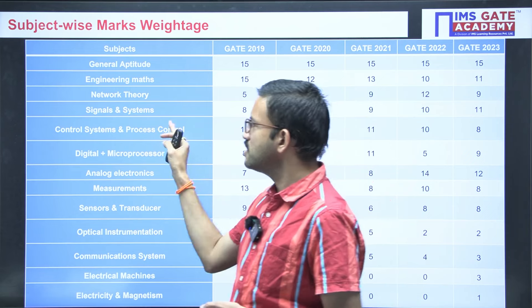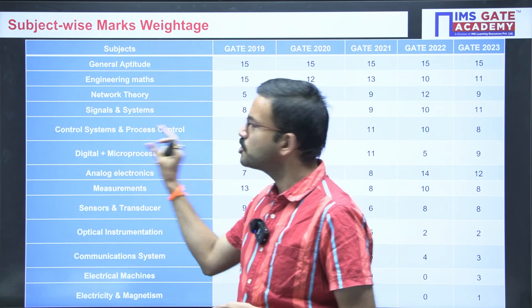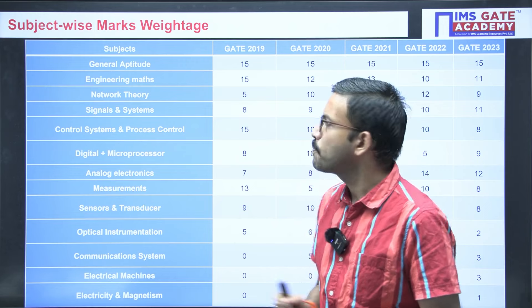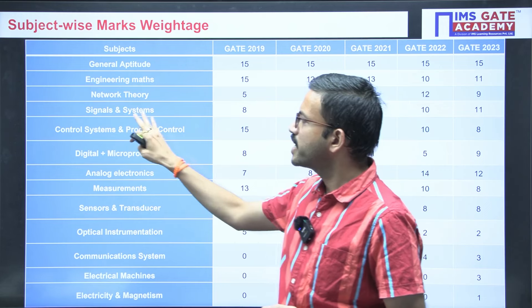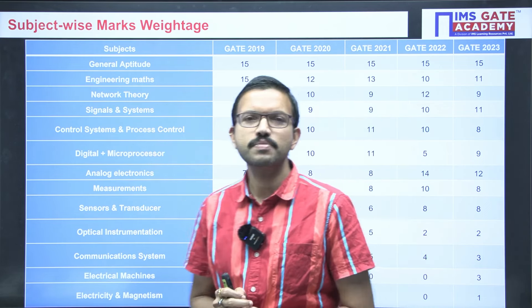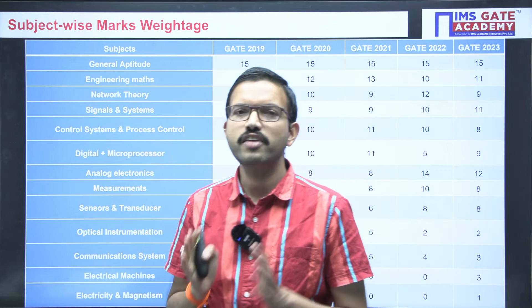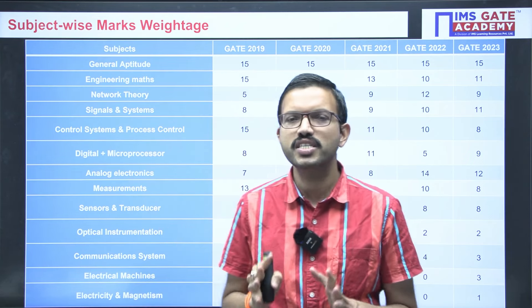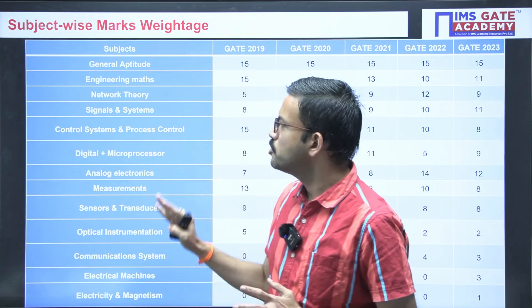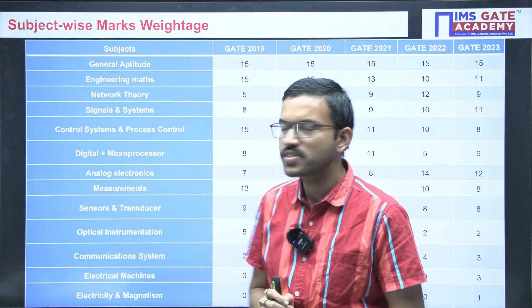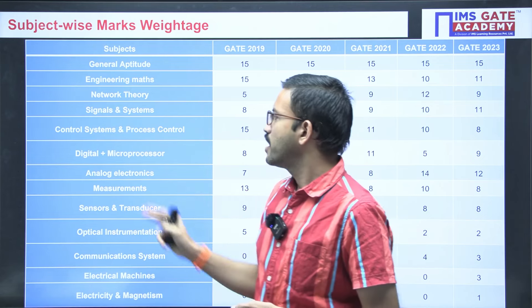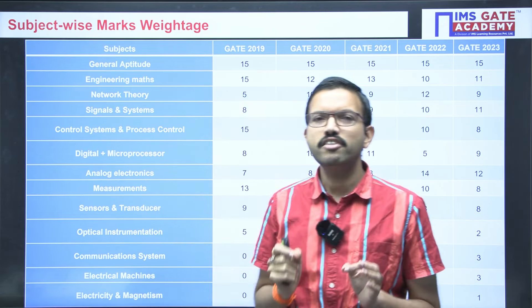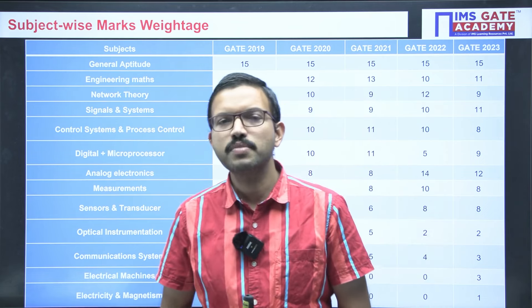Regarding signals and systems and control systems, as usual, around 8 marks were given, and whatever the important concepts and standard modules are there, from those modules only they asked the questions. Regarding the digital circuits subject, in general the weightage of this subject is around 8 marks.